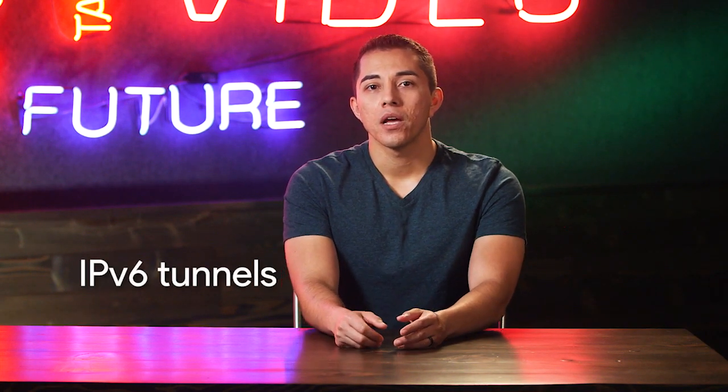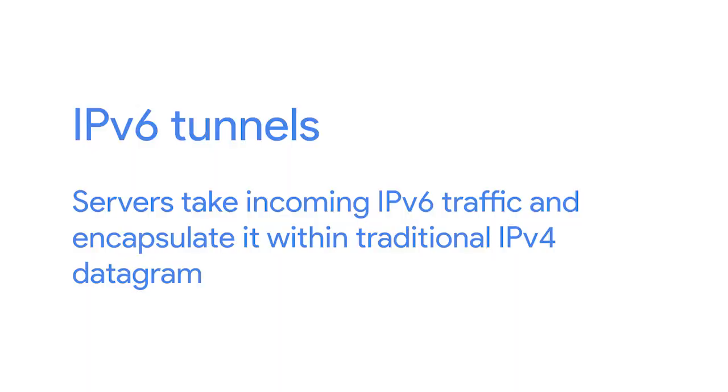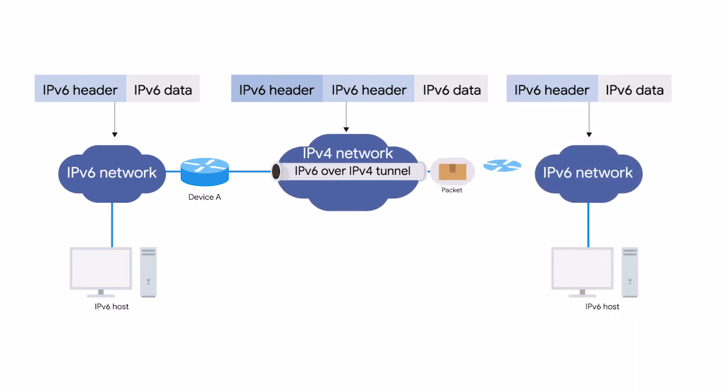Probably more important is for IPv6 traffic to have a way to travel over IPv4 networks. It's easier for an individual organization to make the move to IPv6 than it is for the networks at the core of the internet to. So while IPv6 adoption becomes more widespread, it'll need a way to travel over the old IPv4 remnants of the internet backbone. The primary way this is achieved today is through IPv6 tunnels. IPv6 tunnel servers on either end of a connection take incoming IPv6 traffic and encapsulate it within traditional IPv4 datagrams, which are delivered across the IPv4 internet space where another IPv6 tunnel server performs the de-encapsulation and passes the IPv6 traffic further along the network.